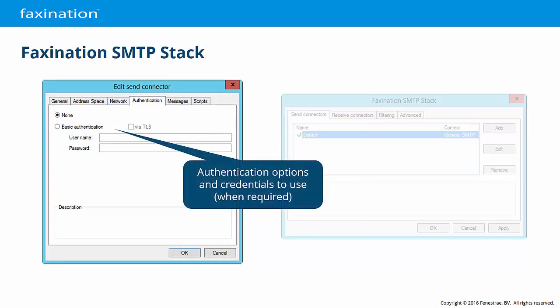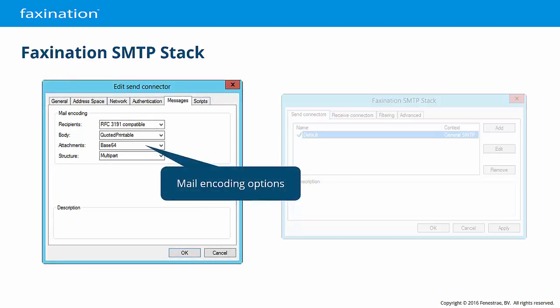When required, you may use authentication to identify this send connector to the remote mail server. When basic authentication is enabled, you may also enable the Transport Layer Security option, which will prevent the credentials from being transmitted in plain text — a potential security risk. The Messages tab allows you to configure how the outbound message body and binary attachments will be encoded and structured. The encoding method and structure chosen depend on the requirements of the receiving SMTP clients. Automated systems in particular may require specific encoding schemes and prefer single-part or multi-part messages.